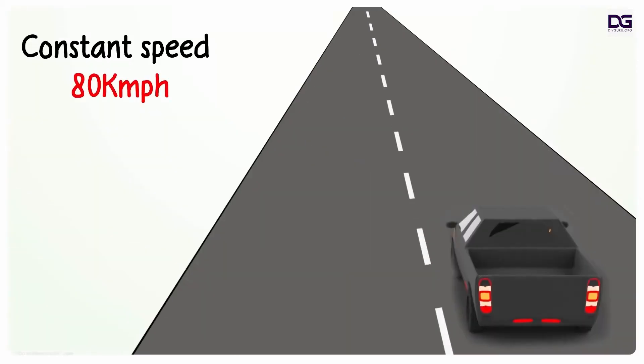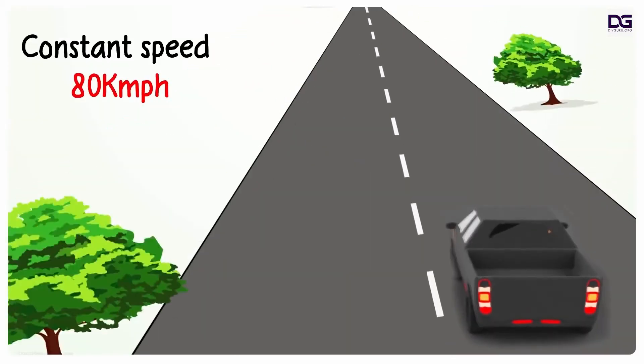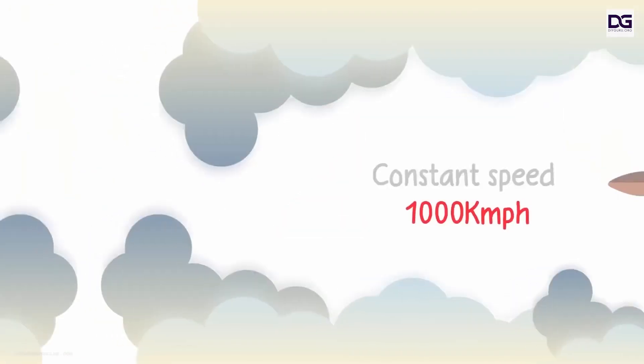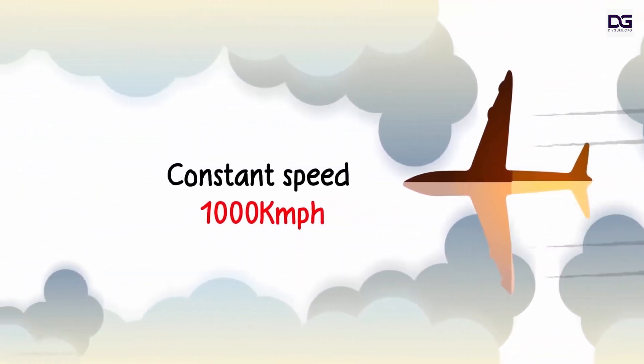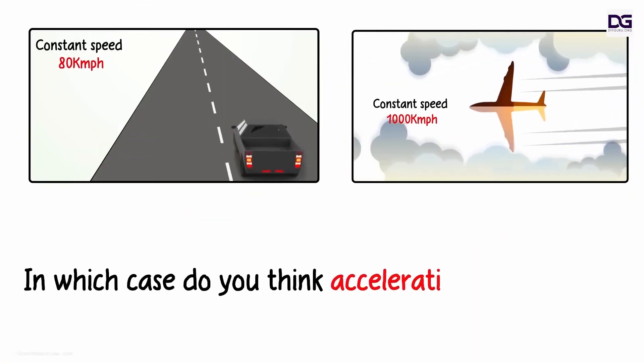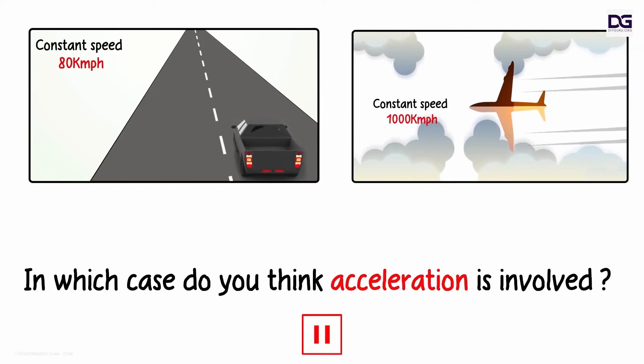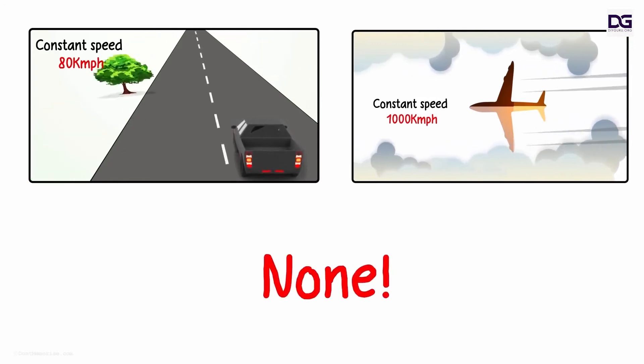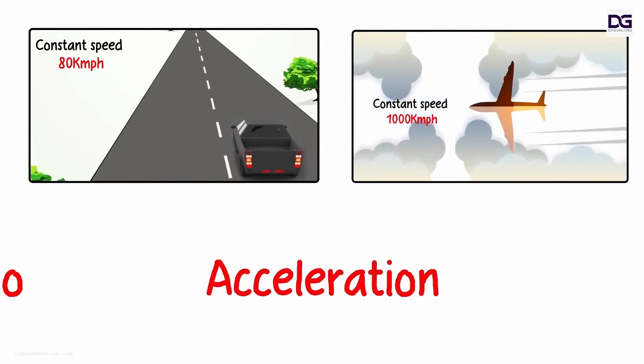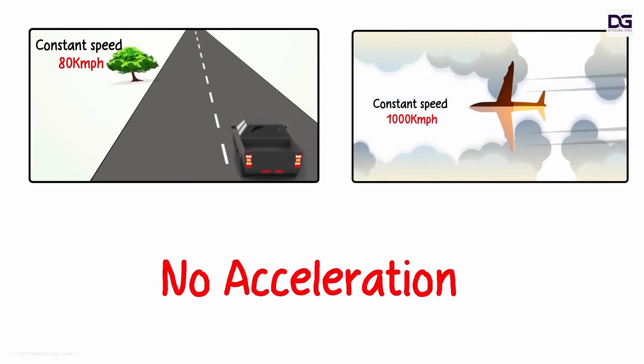Let me give you two examples. In the first one, a car is traveling in a straight line at a constant speed of 80 kilometers an hour. In the second one, a plane is traveling in a straight line at a constant speed of 1000 kilometers an hour. In which case do you think acceleration is involved? None. In both cases, the velocity is not changing at all, hence there will be no acceleration in either of the cases.